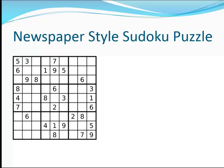A Sudoku puzzle is also an ordered arrangement of integers. This is a 9x9 newspaper style Sudoku puzzle. The numbers between 1 and 9 appear exactly once in each column and each row of the puzzle. This is equivalent to the magic square constraint that the sum of the numbers in each row and each column be equal to the magic sum. A newspaper style puzzle has the additional constraint that the numbers between 1 and 9 appear exactly once in each 3x3 submatrix within the puzzle.